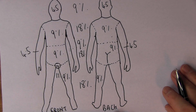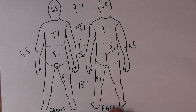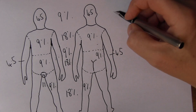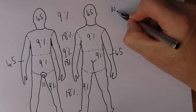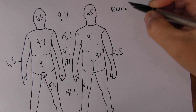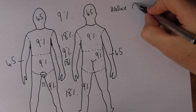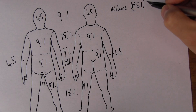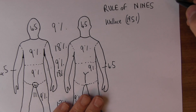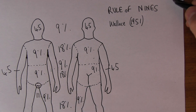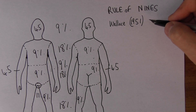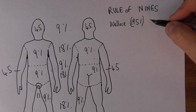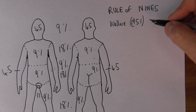Now of course I didn't work this out for myself. This is based on the Rule of Wallace, 1951, published in the Lancet. Because we don't work these things out for ourselves — we only teach and practice because we stand on the shoulders of giants. In this case, Alistair Burns Wallace — appropriately named, Burns was his middle name.